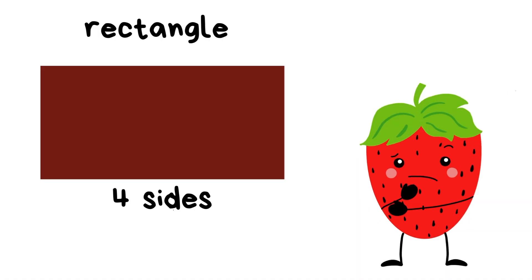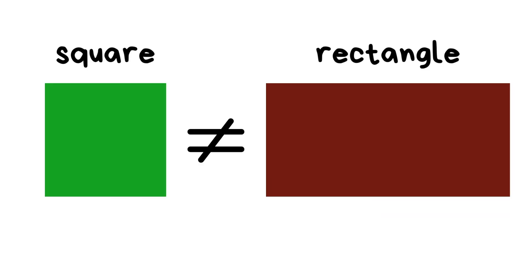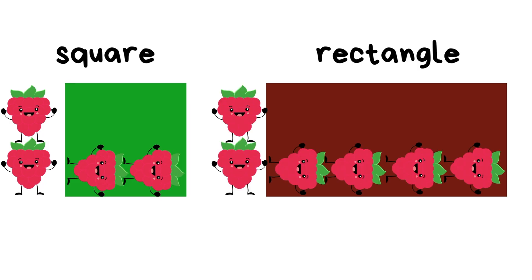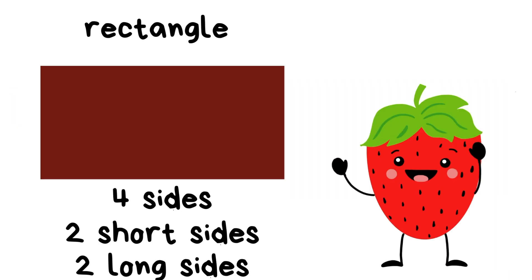Now this can be a little confusing, because there's another shape that has four sides — and that is a square. A square and a rectangle both have four sides, but that doesn't mean they're the same. A square has four sides and all of its sides are the exact same size. But on a rectangle, two of its sides are short and two of its sides are long.